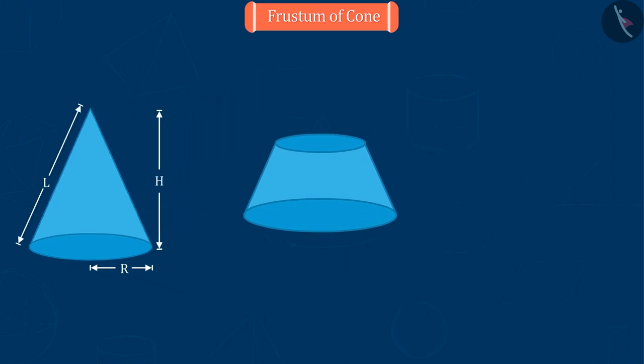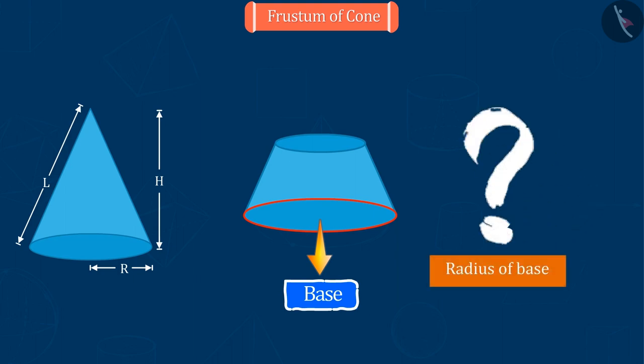You can see that the frustum has two circular ends. Its lower end is called the base of the shape. Can you tell the radius of this base?